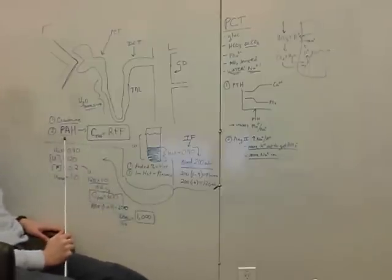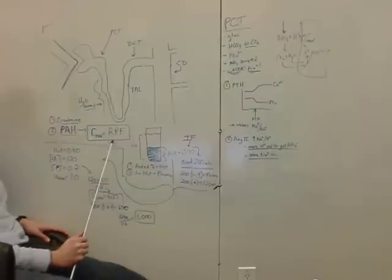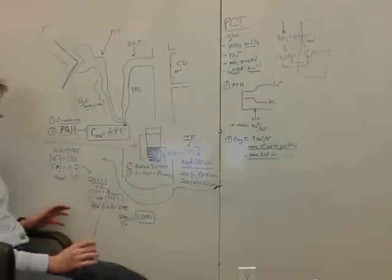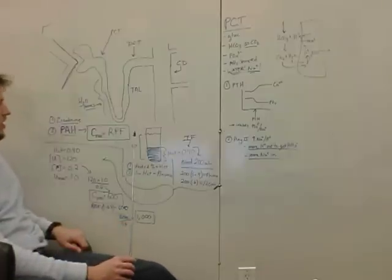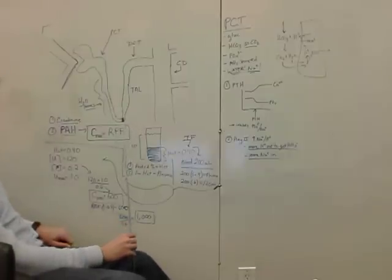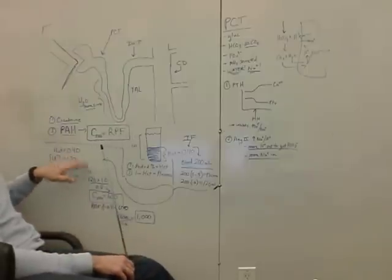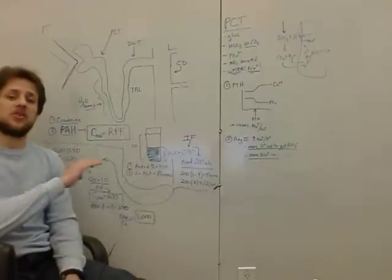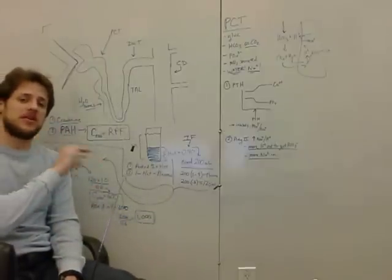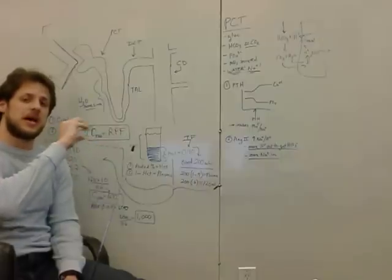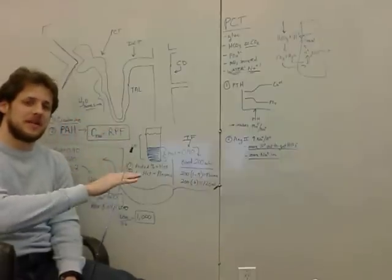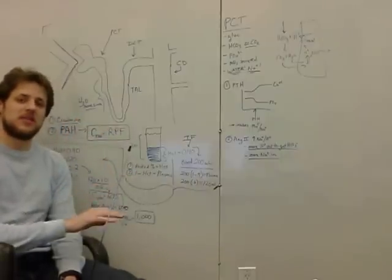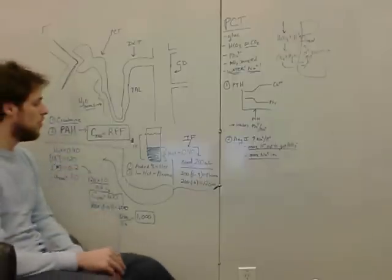The PAH clearance is equal to the renal plasma flow. We're going to calculate it just like any other renal clearance — urine is on the top. The clearance equals the urine concentration times the urine flow rate, divided by the plasma concentration. That's clearance, whether it's creatinine, PAH, or water.